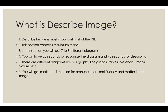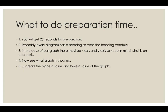In the Describe Image part, you will have 25 seconds to recognize the diagram and 40 seconds to describe it. There are different types of diagrams: bar graphs, line graphs, tables, pie charts, maps, pictures, etc. You will get marks in this section for pronunciation, fluency, and content. Pronunciation means how you pronounce words like a native English speaker. Fluency means how well your speech flows without fumbling. Content means what you see in the picture and what you are speaking about.